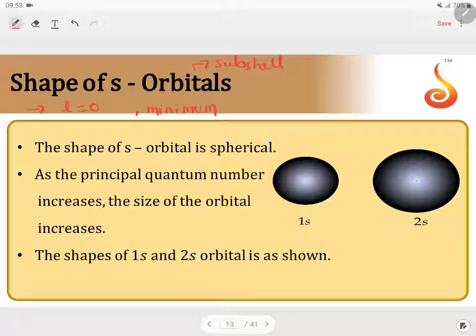minimum principal quantum number. Minimum N value to get S subshell will be 1. So it starts from 1 and it can be up to infinity.